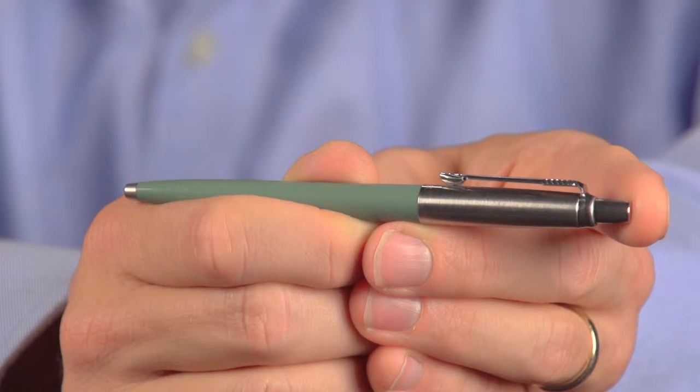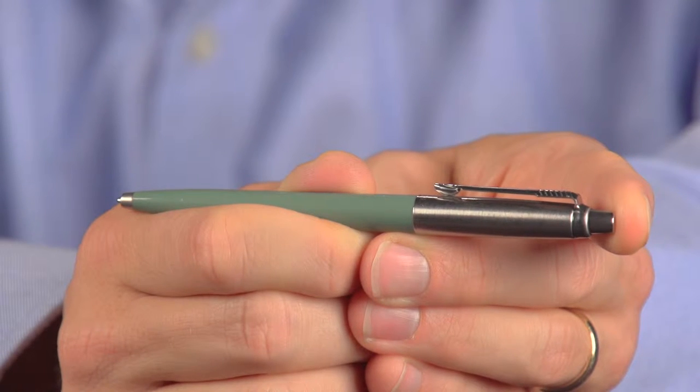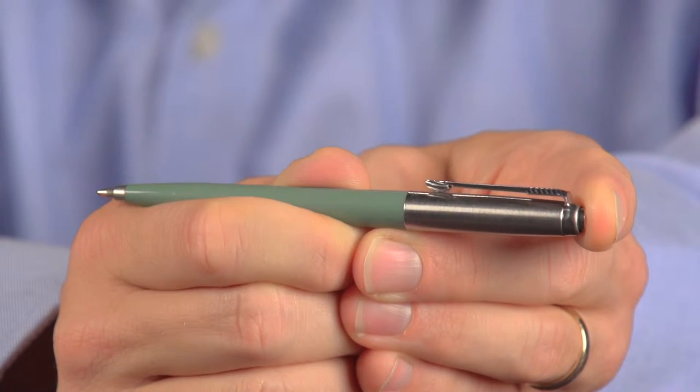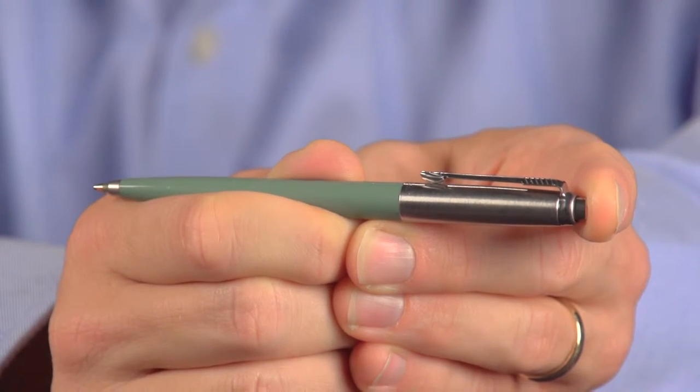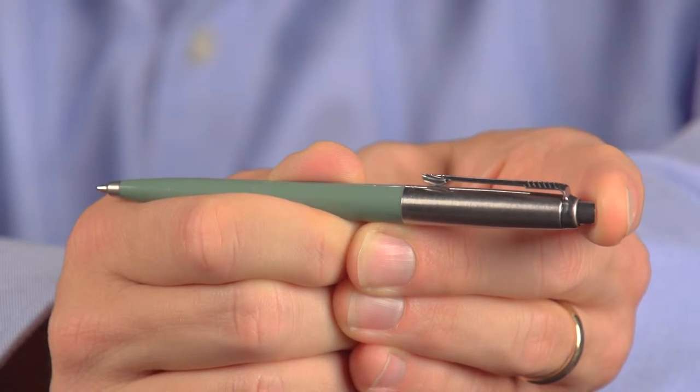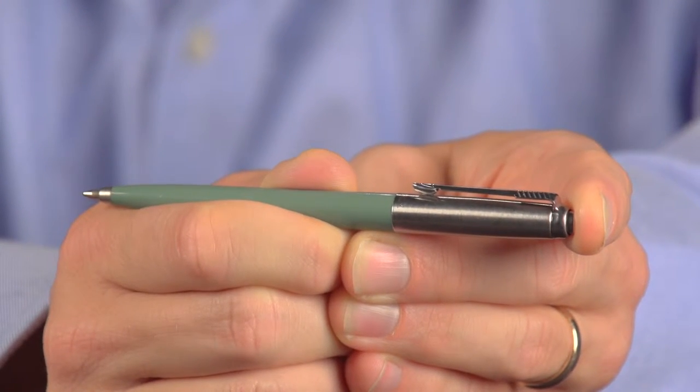Now listen carefully, and you'll notice that it emits four clicks. A click when I push the button, a second click when I release it, and then when I push the button to retract the ink cartridge, a third click, and release, a fourth click. To understand why these clicks occur, let's look inside.